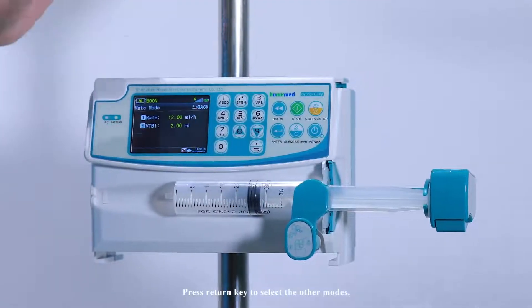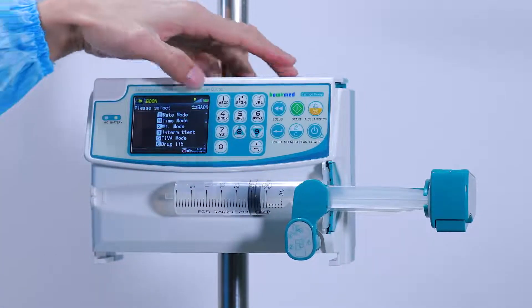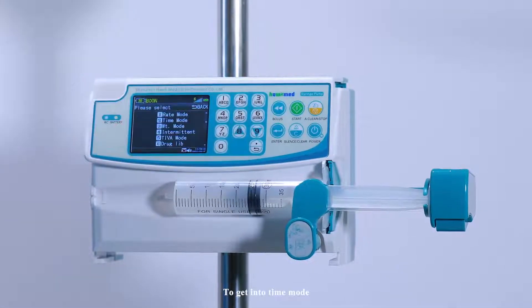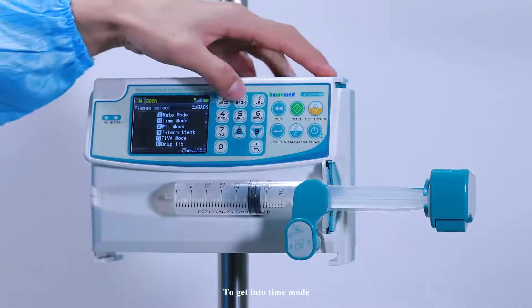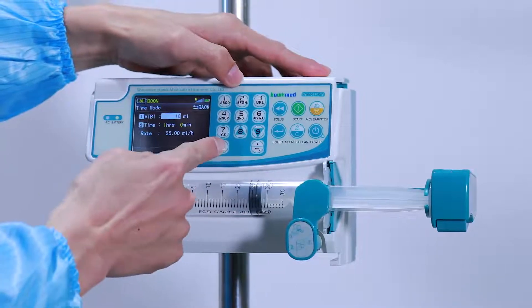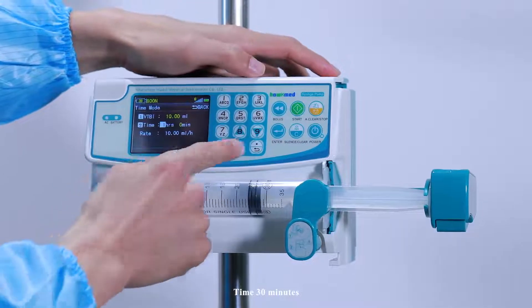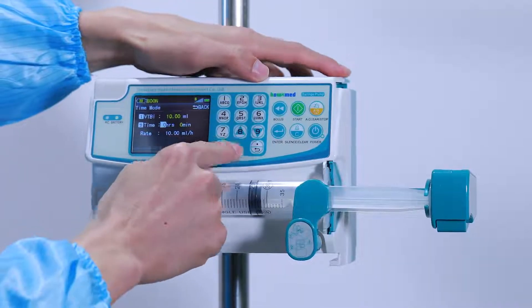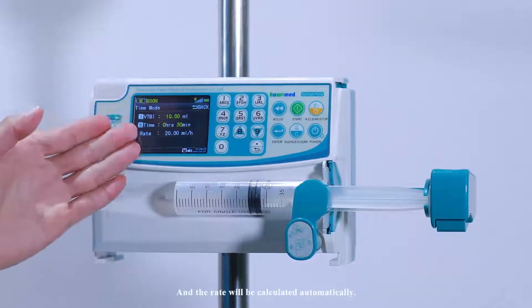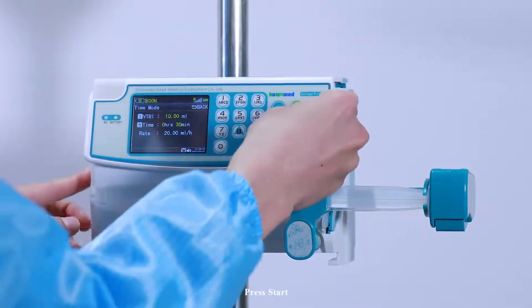Press return key to select other modes. To get into time mode, press 2 and set VTBI to 10ml. Set time to 30 minutes. The rate will be calculated automatically. Press start.